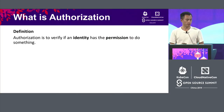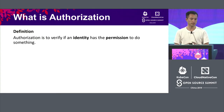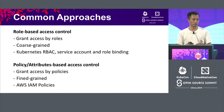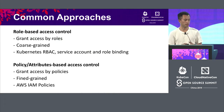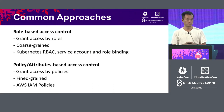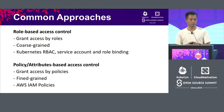First I would like to talk about authorization. Authorization is to verify if an identity has permission to do something. There are many common approaches, like role-based access control, which grants access by roles — it is coarse-grained. A typical example is Kubernetes RBAC. There's also policy or attribute-based access control, which grants access by policies and is more fine-grained. A typical example is AWS IAM policies.